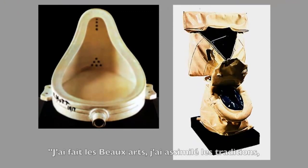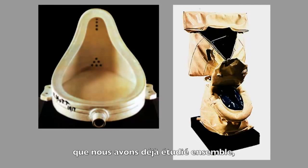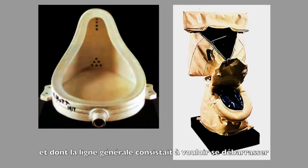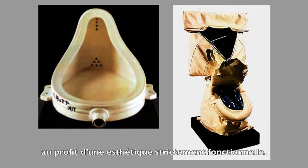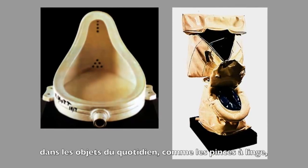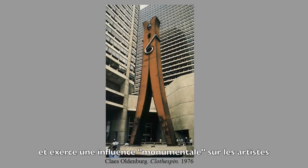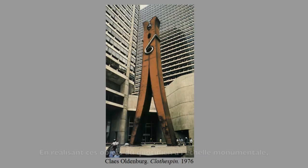They say: I went to art school, I understand the whole tradition, and I'm going to change that. In the pop art movement, they even understand the Bauhaus — the idea of throwing out antique art history and design in favor of new industrial design where form follows function. In the 1960s, the Bauhaus aesthetic of designing even everyday things like clothespins was almost monumental for artists growing up in the 50s and 60s. I think what Claes Oldenburg does by making large, useless objects out of everyday things is kind of calling attention to the history of design, not just the history of art.